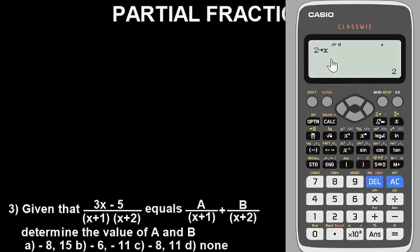Having done this, question 3 says: given that (3x - 5) all over what we have here (x + 1) in bracket and also (x + 2) in brackets equals A over this plus B over this, determine the value of A and B. So guys, this is very simple. What this thing is trying to let us understand is that we should simplify this.